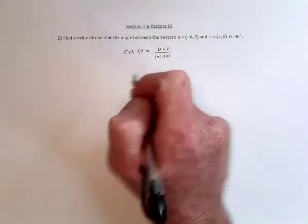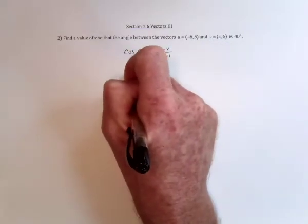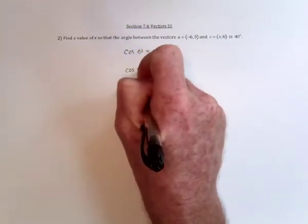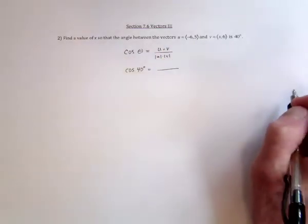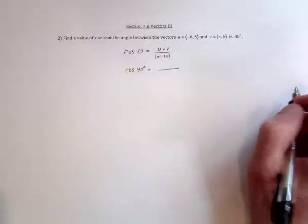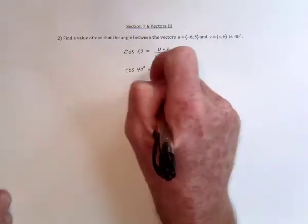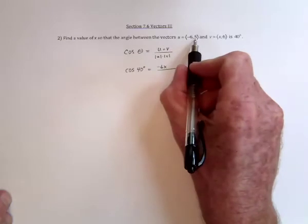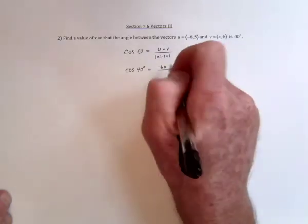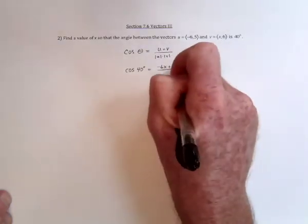So I have cosine of 40 degrees equals, and then for the dot product, it's going to be multiplying the two x components, so negative 6 and x, multiply the two y's, which is going to be 30, and add those together.